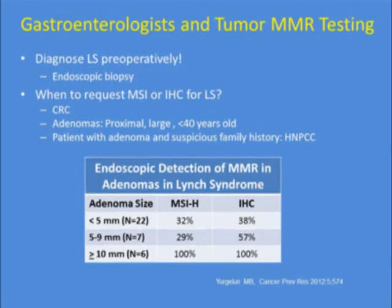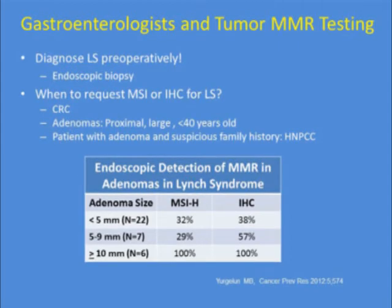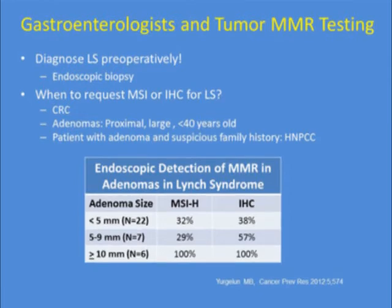Work from the Boston group compared MSI versus IHC for detection of Lynch syndrome within polyps, and accuracy varies by size. For small lesions, there's only about a 1-in-3 hit rate that endoscopic biopsy will identify a Lynch syndrome carrier by either MSI or IHC. As polyps get larger, IHC becomes slightly more accurate. For lesions a centimeter or greater, the accuracy of MSI and IHC is similar — a small but provocative study.